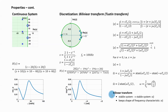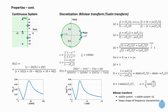Therefore, the bilinear transform has the following properties: a stable system is transformed into a stable system, since poles in the left-hand side of the S-plane map inside the unit circle of the Z-plane. In addition, the bilinear transform keeps the shape of the frequency characteristic. These are the reasons why the bilinear transform is used for the design of discrete time IIR filters. Typically, you first design a continuous time system, discretize it with the bilinear transform, and that gives your discrete time IIR filter.